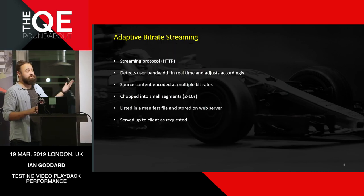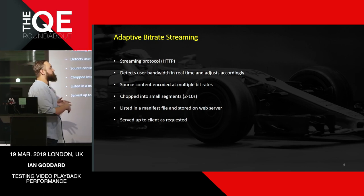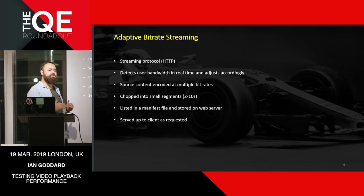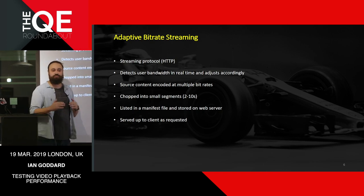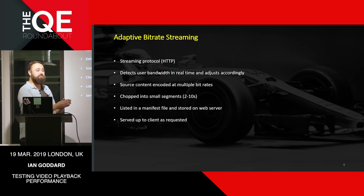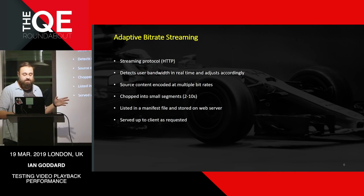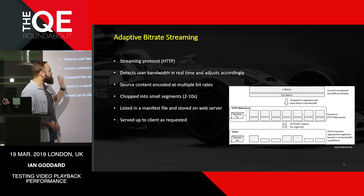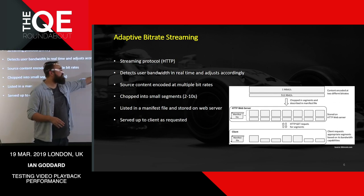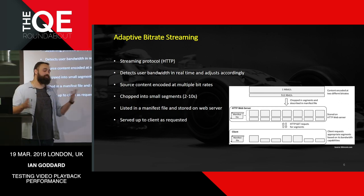In order to do this, we have adaptive bitrate streaming — a streaming protocol across HTTP. It detects your bandwidth in real time and adjusts accordingly. You may have seen this when watching something online and the quality suddenly dips — that's because you don't have enough bandwidth. It manages this by chopping content into small segments, typically between two and ten seconds, stored at multiple quality levels — for example, one megabit and 512 kilobit — listed in a manifest file on a web server.